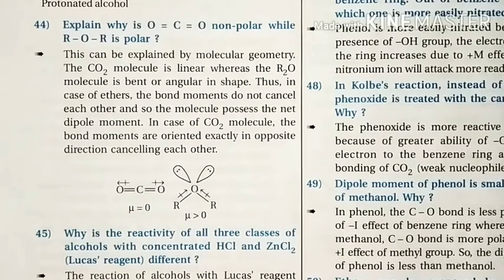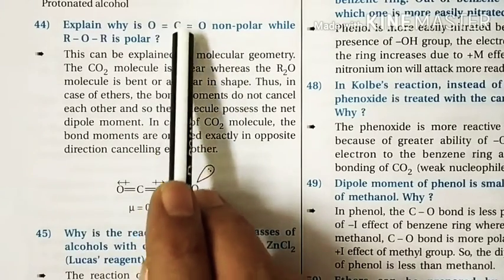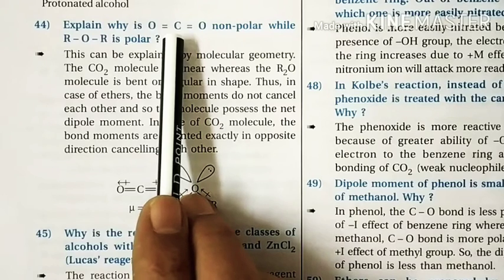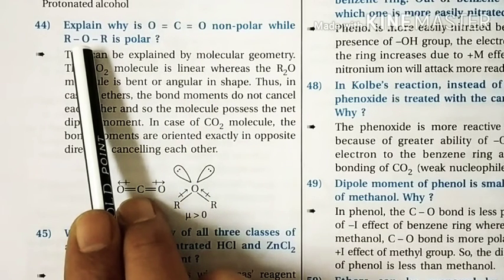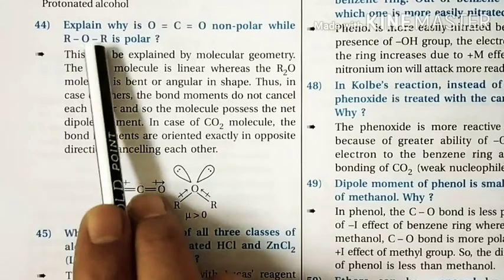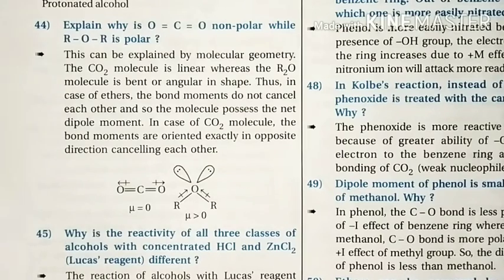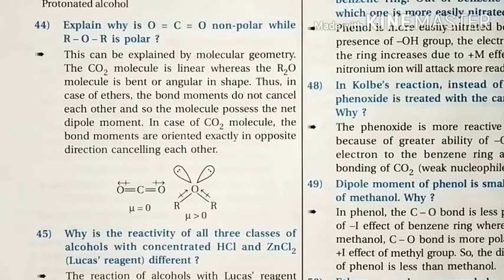Question 44: Explain why CO2 is non-polar while ROR is polar. In CO2, the central carbon does not have a lone pair, making the molecule linear, and the bond moments cancel each other. In ether (R2O), the oxygen has a lone pair and is sp3 hybridized, making the molecule bent or angular. Therefore, the bond moments do not cancel each other, and the molecule possesses a net dipole moment.